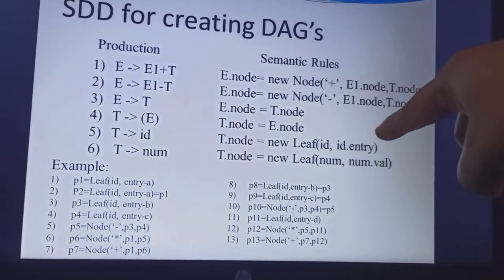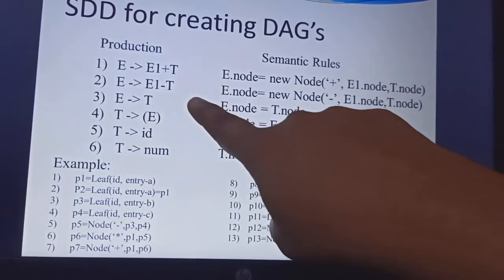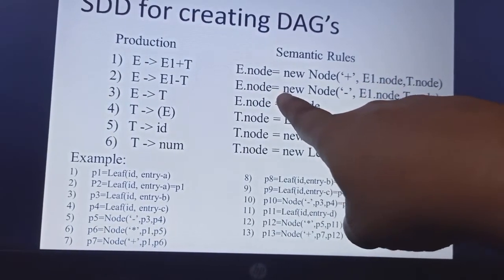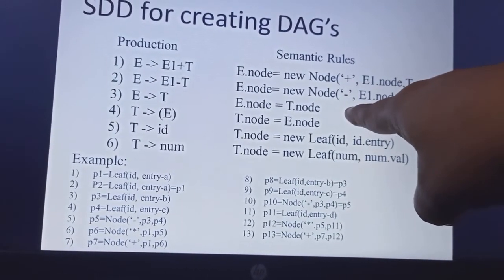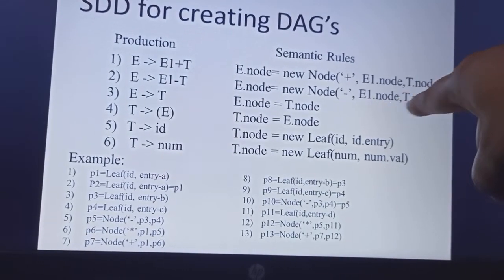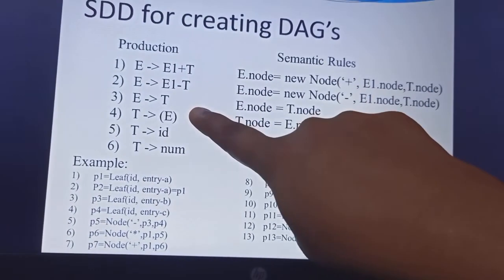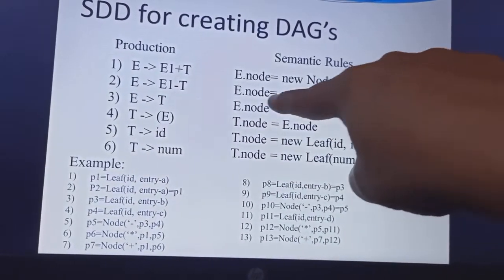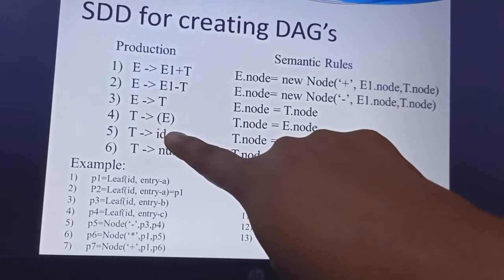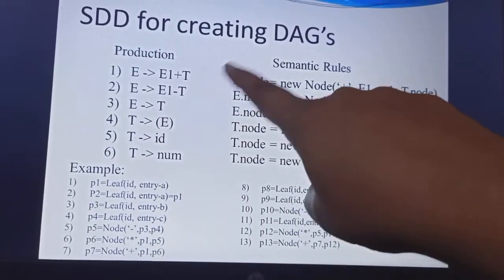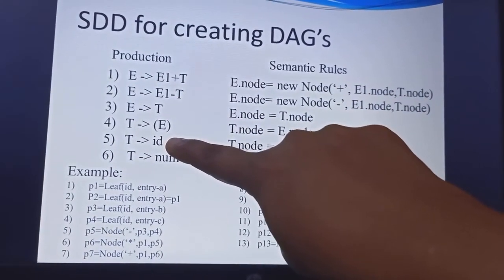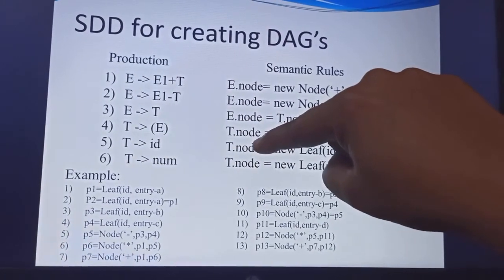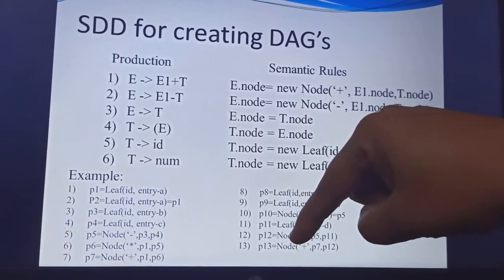For E → T, we directly assign E.node = T.node. For T → (E), there is no arithmetic function, so we directly assign E.node to T.node. These are the semantic rules for constructing the DAG nodes for each production.